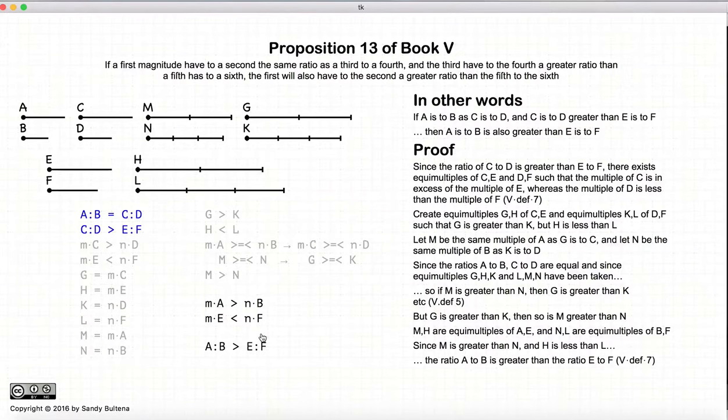Now, these two conditions, according to Definition 7, if we have these two conditions, it means that the ratio of a to b is greater than e to f.